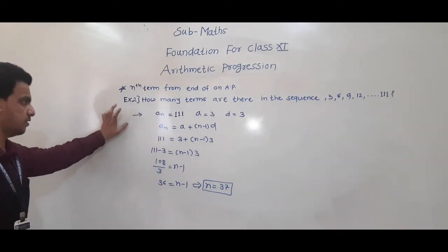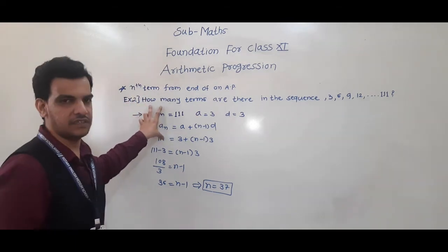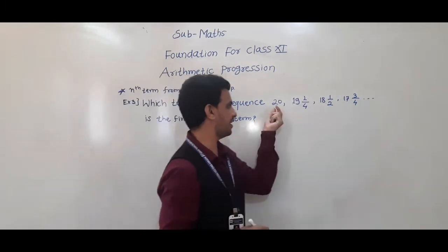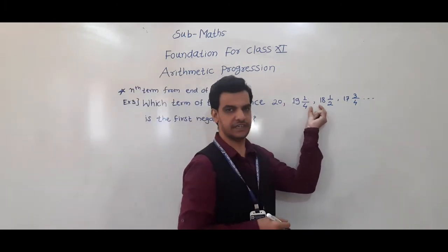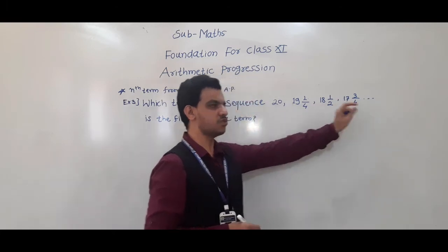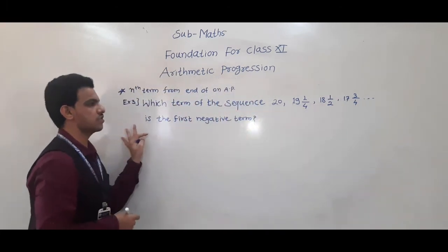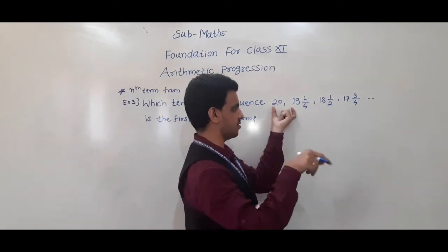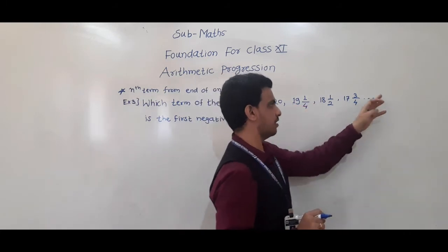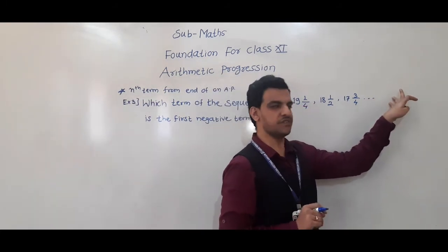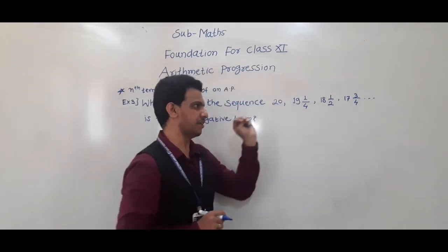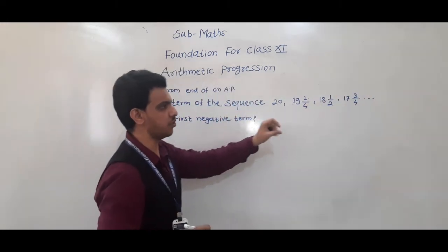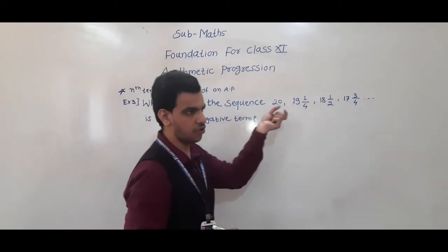Third example: Which term of the sequence 20, 19¼, 18½, 17¾ and so on is the first negative term? This sequence is in decreasing order, so somewhere we will get negative terms. We have to find which term is the first negative term — that is, find the place of that term.